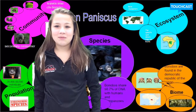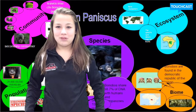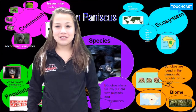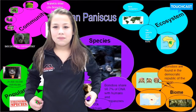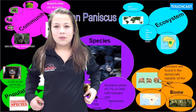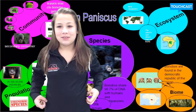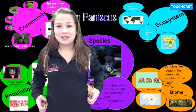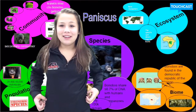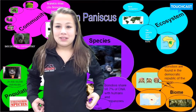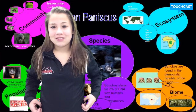The food chain of the bonobo is leaves, insects, bonobo, and alligators. The producer is leaves, the primary consumer is insects, the secondary consumer is bonobos, and the tertiary consumer is alligators.